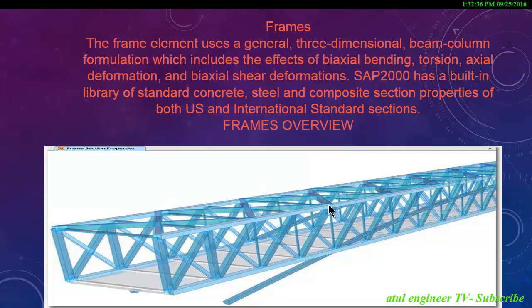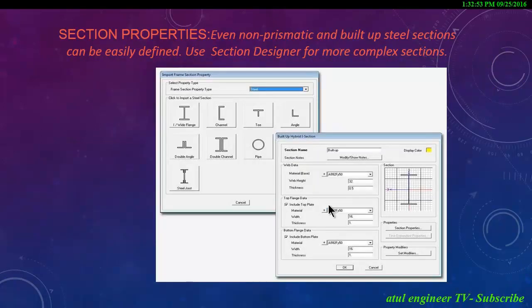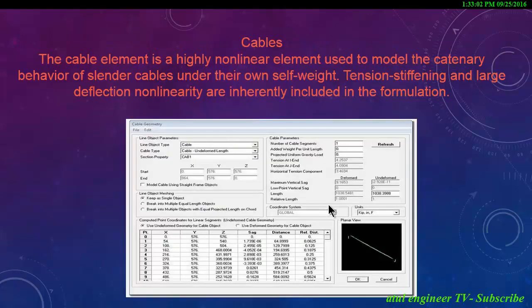The frame element uses the general three-dimensional beam-column formulation, which includes the effects of biaxial bending, torsion, axial deformation and biaxial shear deformations. SAP 2000 has a built-in library of standard concrete, steel and composite section properties of both US and international standards and modern sections. Even non-prismatic and built-up steel sections can be easily defined; use the section designer for more complex sections.